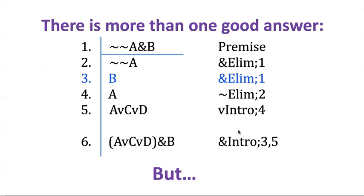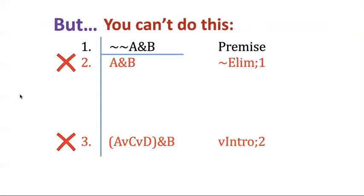When I did conjunction intro here, I'm now citing lines three and five because three is where my B is — the thing that I'm putting into this conjunction. Even though there's more than one good way to do it, that doesn't mean you can do it any possible way. There are restrictions. For example, this does not work. What I cannot do is just lop off these two negation signs here. So this rule would not check out. This is an incorrect application of negation elim. This is also an incorrect application of disjunction intro — a failed use of disjunction intro.